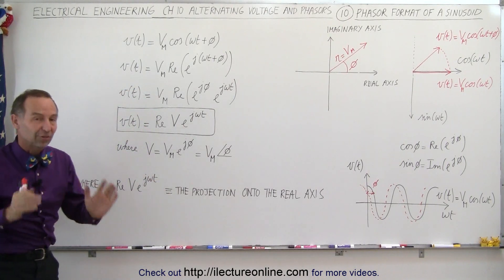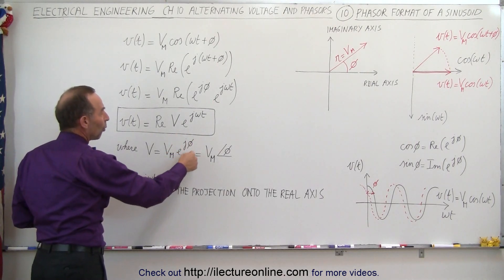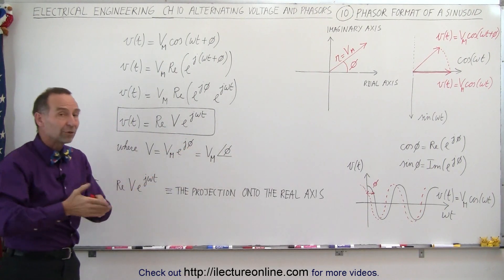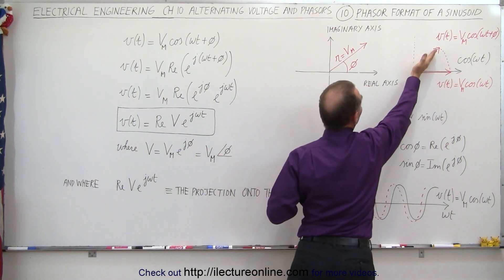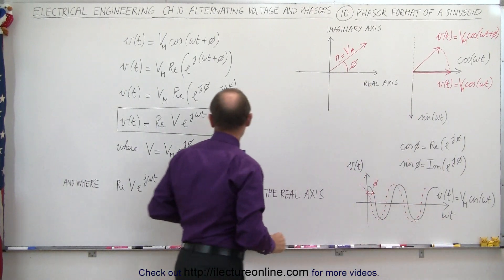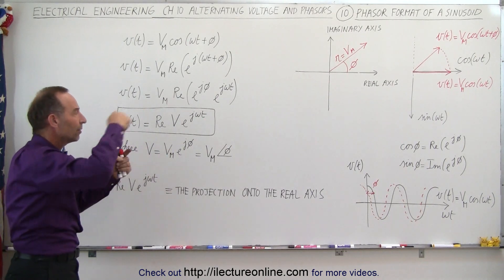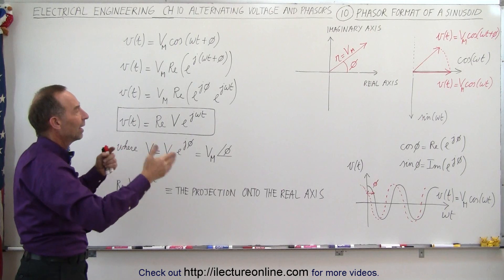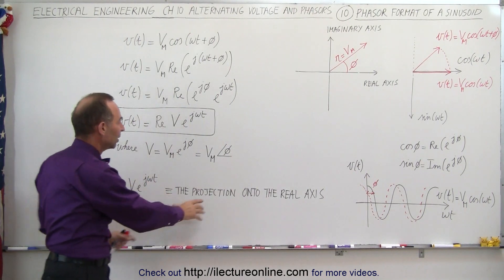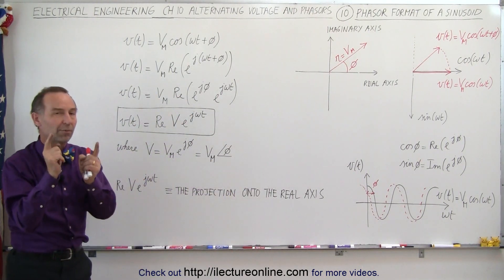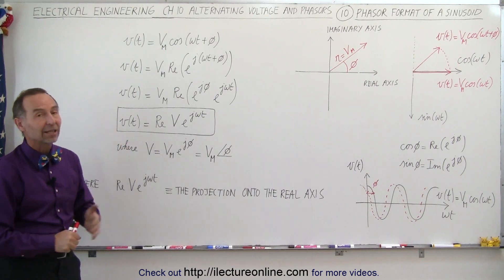Let's summarize the two things we need to consider when dealing with phasors. The first component is where it is located — the phase difference relative to where it would be with no phase difference. If there's no phase difference, we get maximum voltage at t equals zero. If there's a phase difference, we have a different, lesser voltage at t equals zero. The second part is the j omega t part, which causes the phasor to rotate around — every period you come all the way around and everything repeats. The real portion of V times e to the j omega t is simply the projection onto the real axis, representing the voltage at any point in time. That's what we mean by a phasor representing a sinusoid.